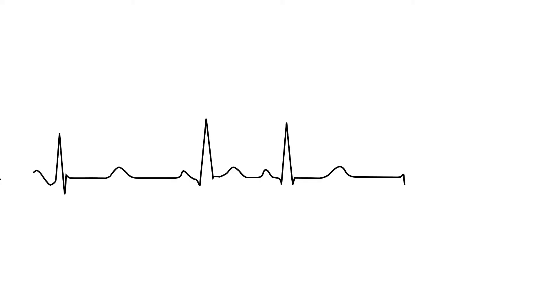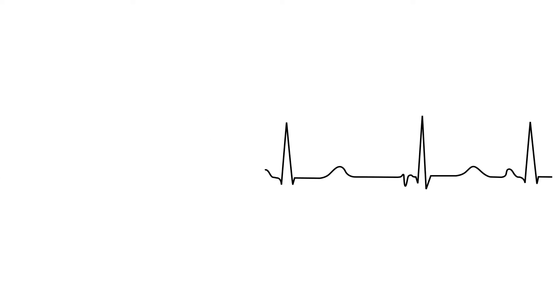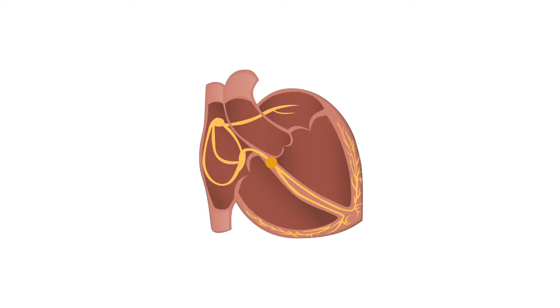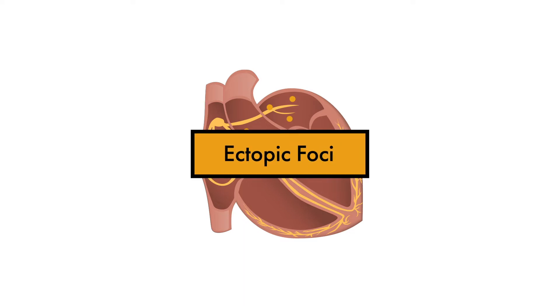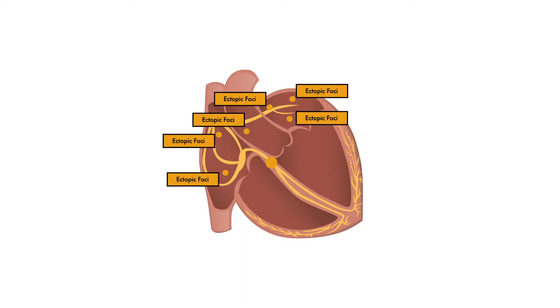A wandering atrial pacemaker occurs when there are multiple areas of depolarization within the atrium being conducted towards the ventricles. These action potentials come from different areas, also known as ectopic foci, other than the SA node, and each generating consecutive action potentials making their way down to the ventricles.